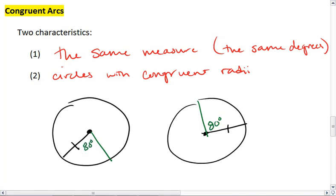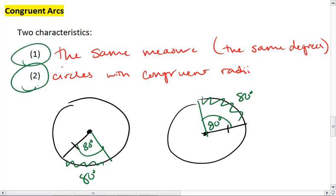And congruent angle measures, or congruent degrees. This is how we end up with congruent arcs. So those two characteristics have to exist: the same measure and congruent radii.